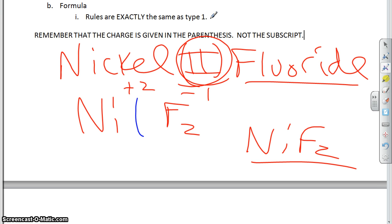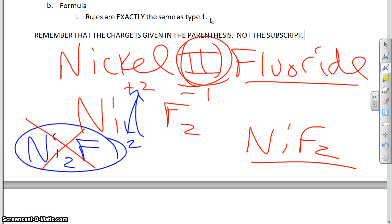Here's the mistake people make. Instead of writing this plus 2 here as a charge, a lot of people will write it as a subscript. And they'll go, nickel 2 fluoride. That, my friends, is always wrong. Don't do that. The only time that has a chance of being right is if it's a one charge, but even then it's just coincidence.